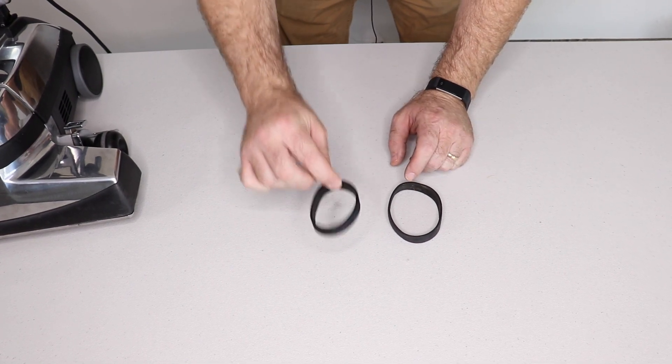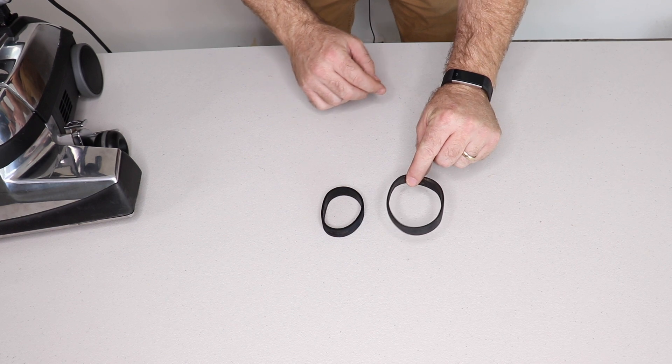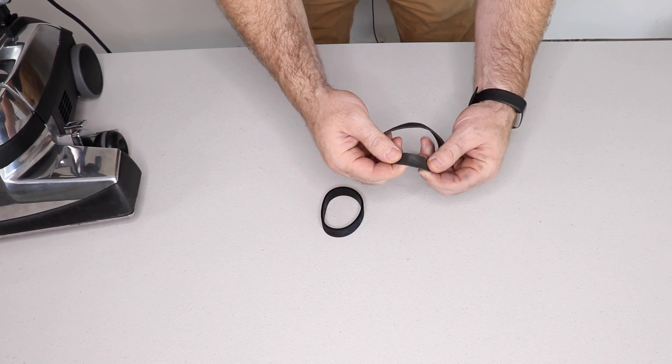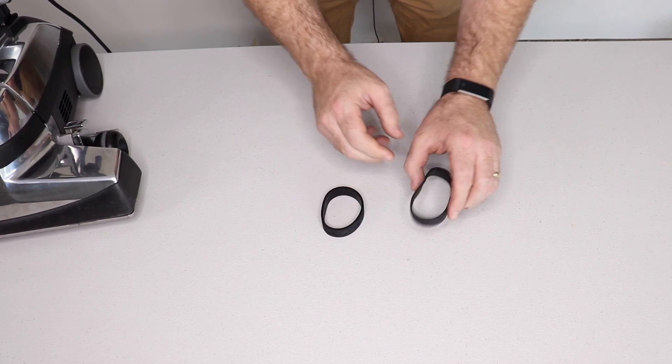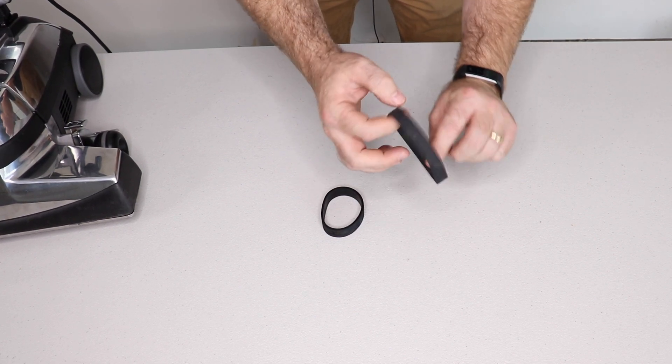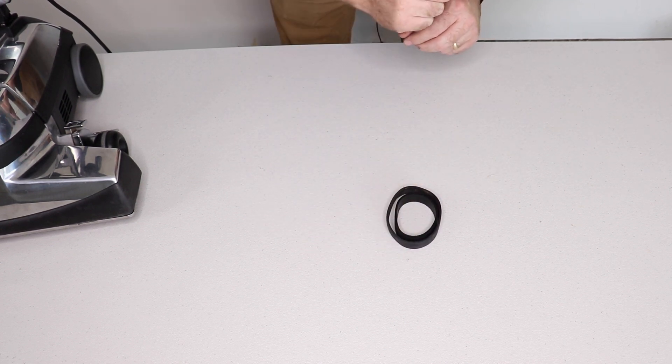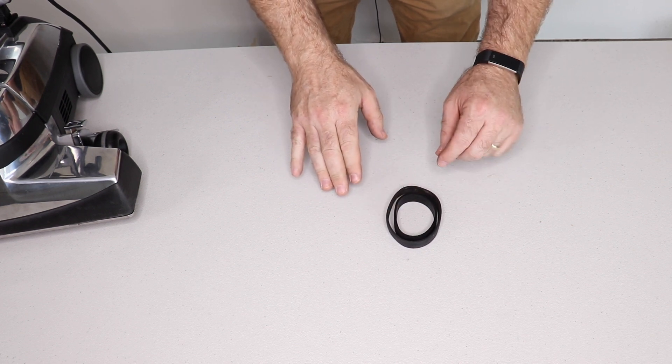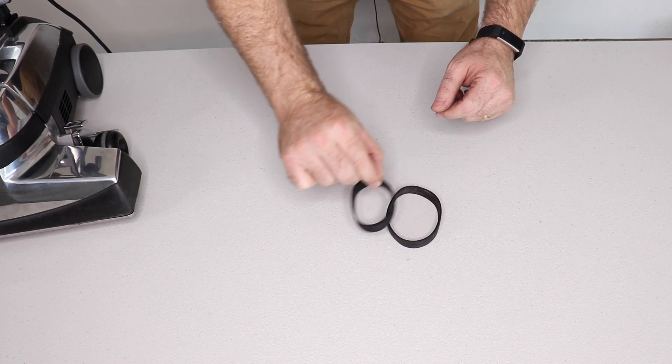So on my right is a brand new Kirby belt. On my left is a Kirby belt from a used Kirby. And as you can see, it's actually in really good condition. It still has pattern tread on it and looks like it doesn't need replaced in any way. But look at this. It has stretched a significant amount. Just for me looking at it, probably at least an inch.